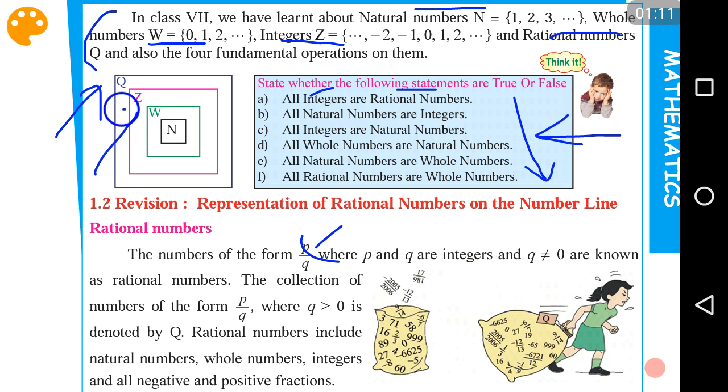So all integers are rational numbers - that is perfectly true because you can see natural number is well inside the outer rectangle or square Q. All natural numbers are integers - that is also true. You can see N is well inside the Z, so that is also true.